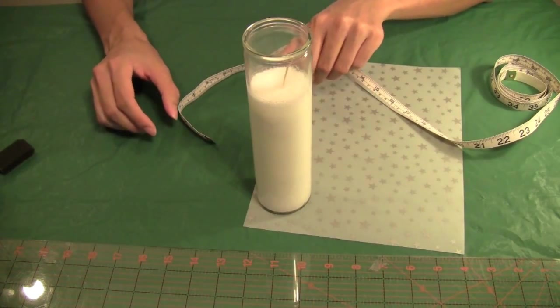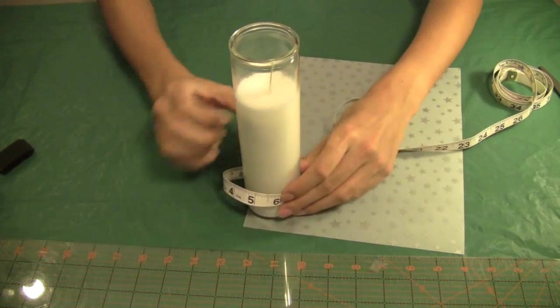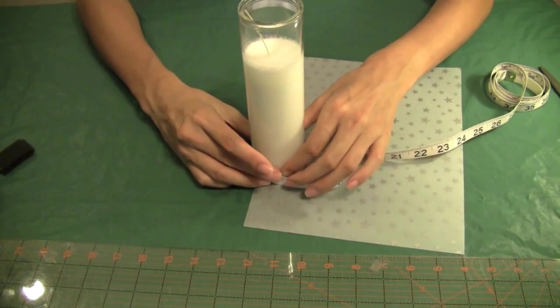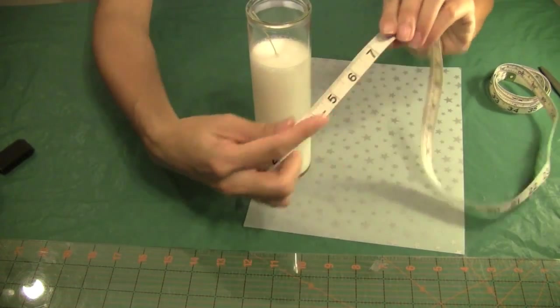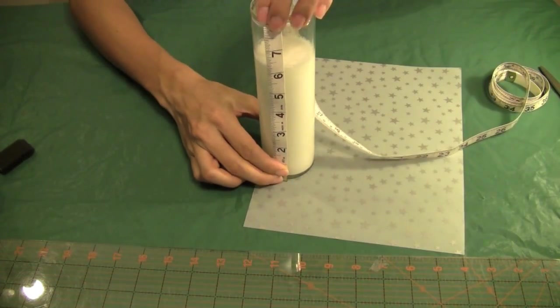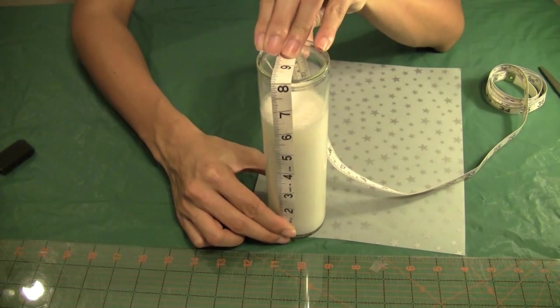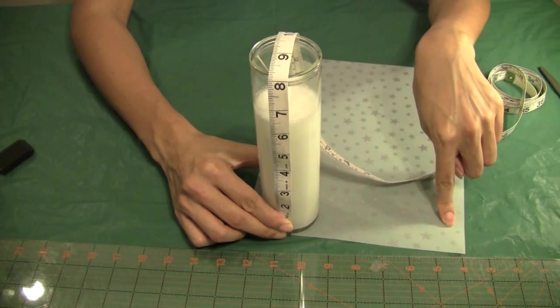My next step is to measure my candle. This candle is approximately 7 inches. I want to have a little bit of overlap, so I'm going to cut my paper to about 8 inches. But I want it to be a little bit smaller, so I'm going to cut it to 7 and a half inches. So that means I'll cut this vellum paper to 7 and a half inches by 8 inches.